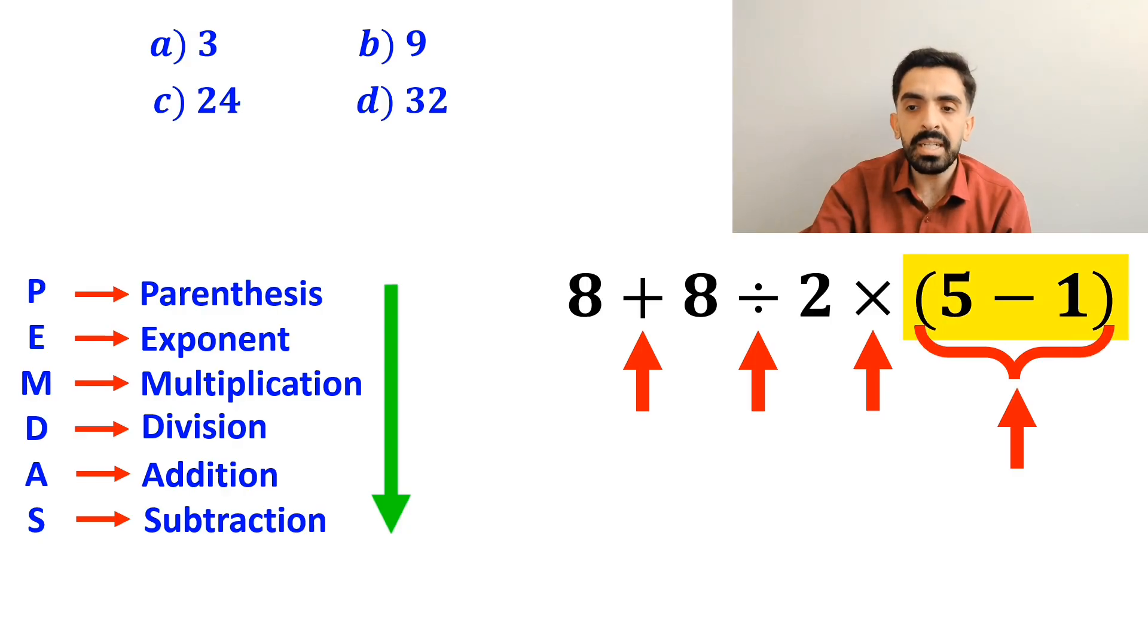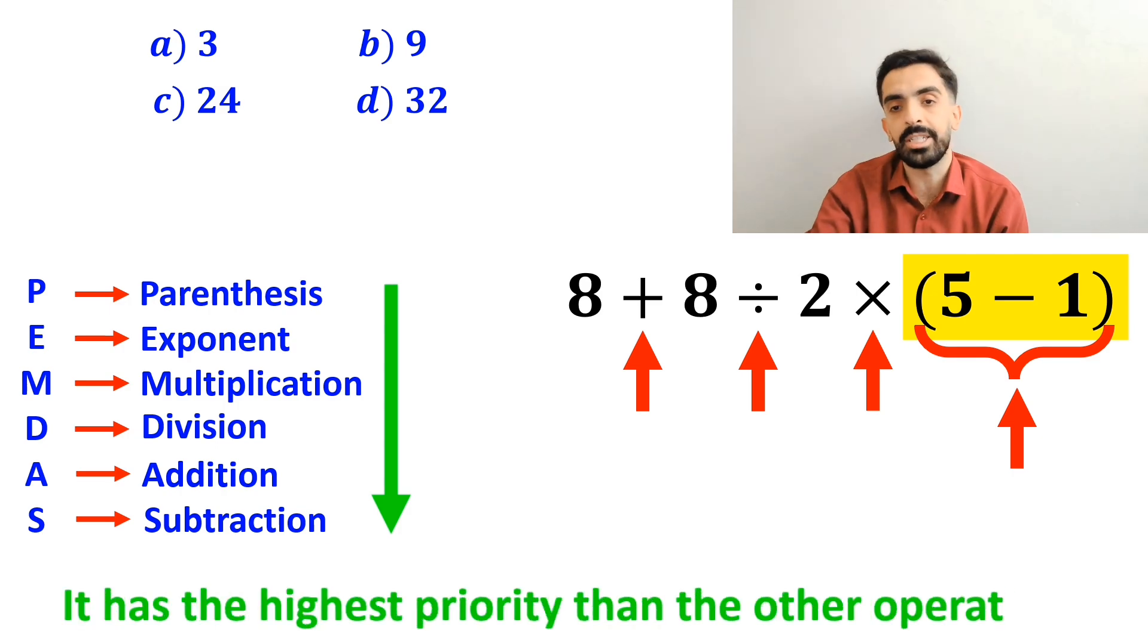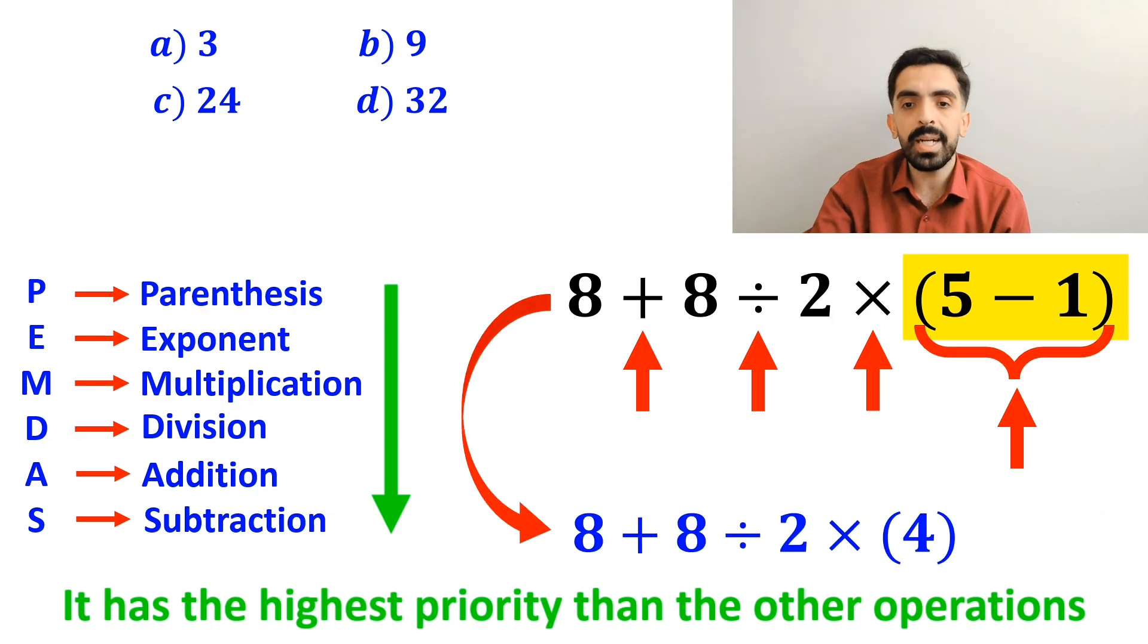We must start with the parenthesis first, because it has the highest priority than the other operations. So, instead of this expression, we can write 8 plus 8 divided by 2 times 4.